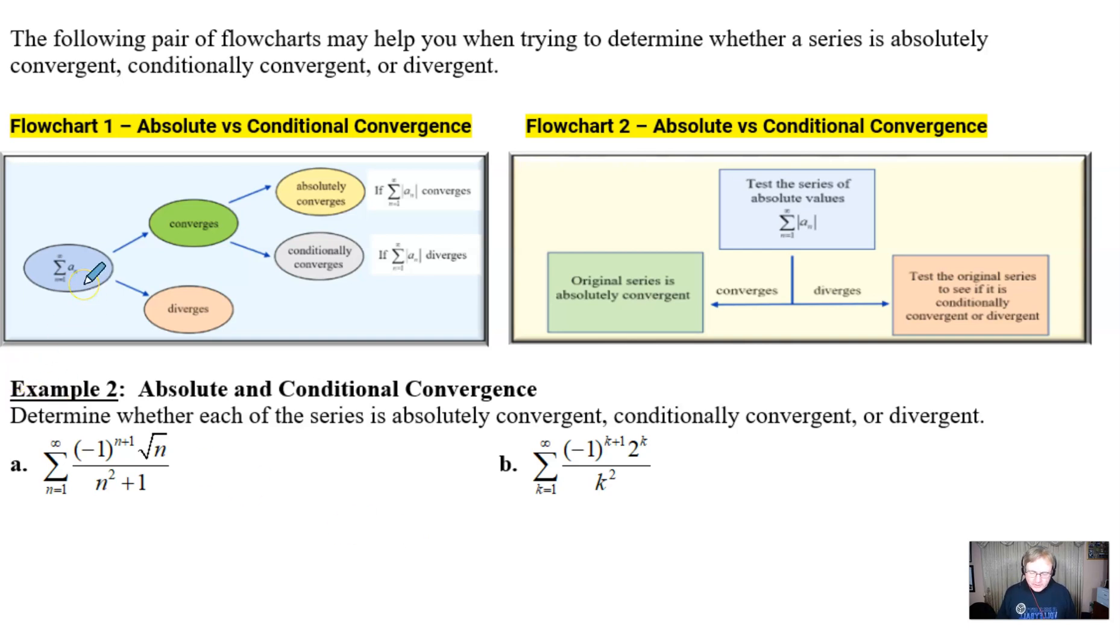So flowchart one, what you could do is you focus on the overall series and try to make a determination. That series could of course diverge and if you're able to determine that well game over right, you don't really have to do anything else. But if that series looks like it converges well then you have to make sure that you're able to distinguish between which type of convergence it demonstrates and you would do that by looking at the absolute value of the expression, take its summation into consideration, and based on whether or not it converges or diverges means you would have absolute versus conditional.